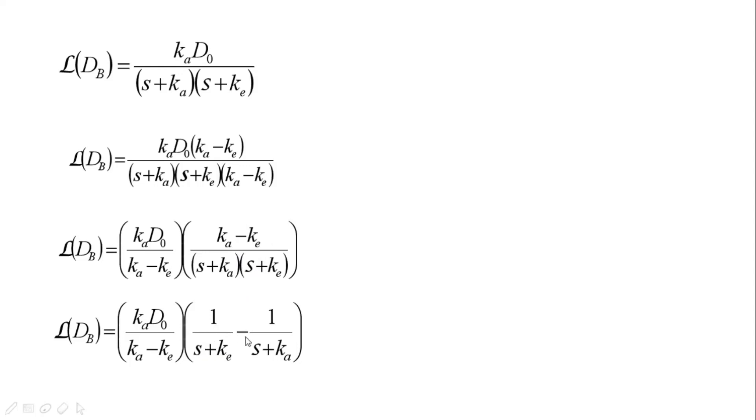Now we can do some partial fraction decomposition, so changing this term into one over s plus ke minus one over s plus ka. Notice how these two are actually the same exact expression, because you can multiply this by s plus ka, multiply this by s plus ke, the s's cancel out, and you're left with ka minus ke.